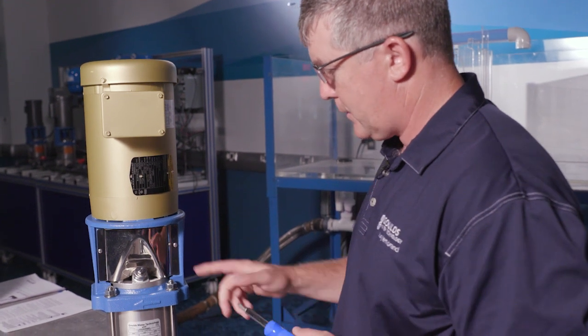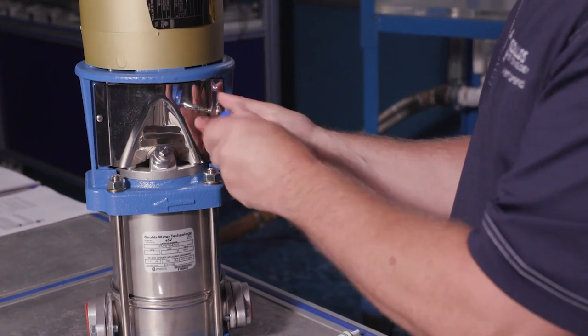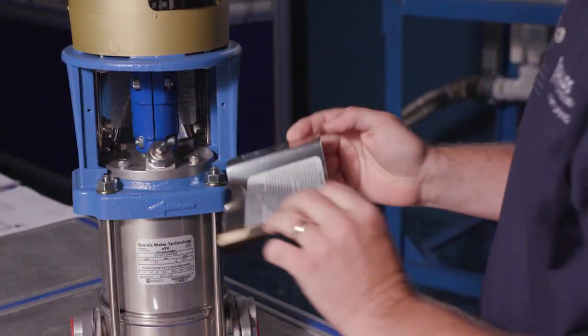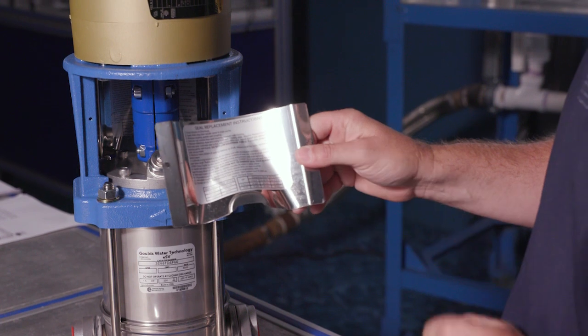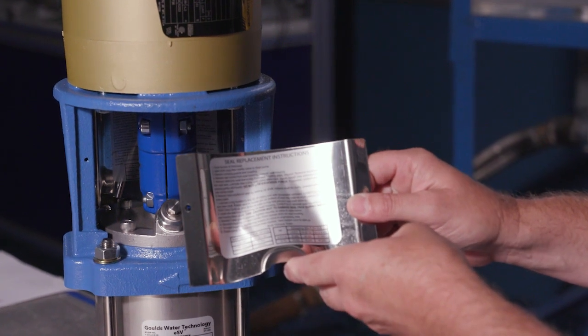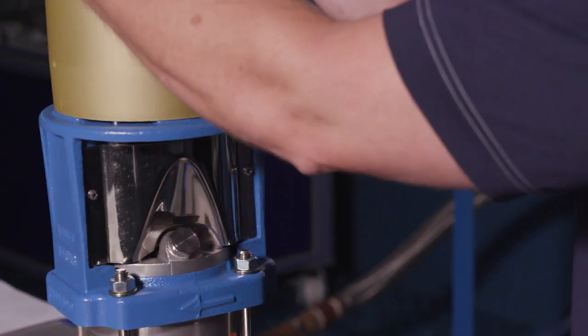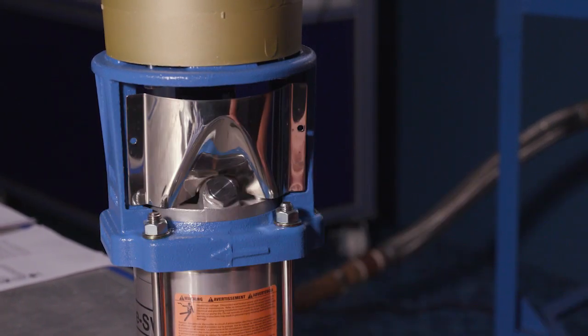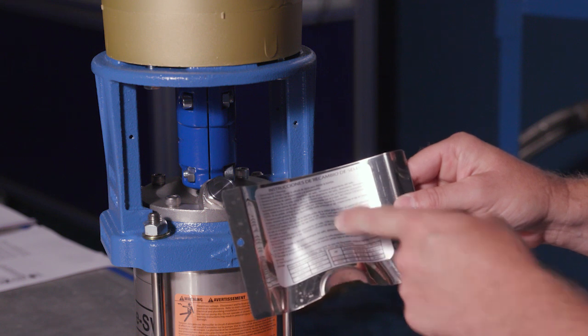The first thing we're going to do is take the coupling guard off. There's a coupling guard on each side, and we just need a Phillips head screwdriver to take those off. Notice that inside the coupling guard there is a seal replacement set of instructions. One is English and then the other is Spanish.